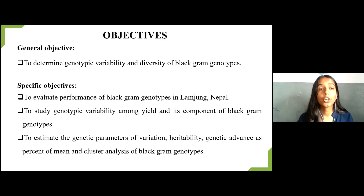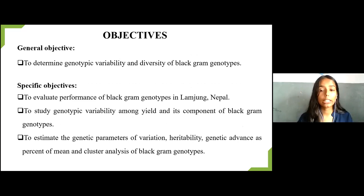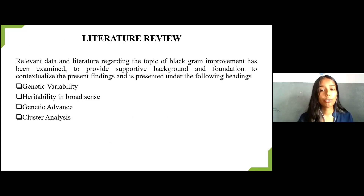The research was conducted with the general objective of determining genotypic variability and diversity of Black Gram genotypes. Specific objectives were to evaluate the performance of Black Gram genotypes in Lamjung, Nepal; to study genotypic variability among yield components; and to estimate genetic parameters of variation — heritability, genetic advance as percent of mean, and cluster analysis of collected Black Gram genotypes. Literature was reviewed under headings of genetic variability, heritability in broad sense, genetic advance, and cluster analysis.